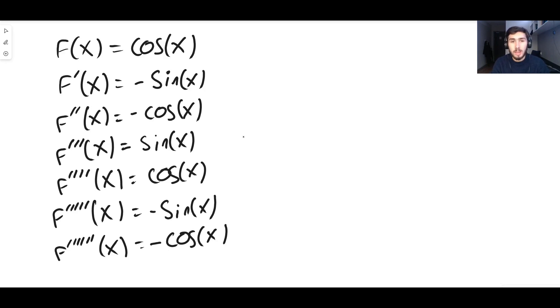Now, if we then evaluate each of these at zero, so we do cos of zero, well, cos of zero is one. Minus sin of zero, that's zero because sin of zero is zero. Cos of zero is one, so minus cos of zero is minus one. Zero, cos of zero is one. Minus sin of zero is zero. Minus cos of zero is minus one.